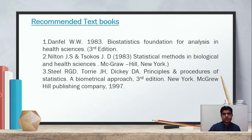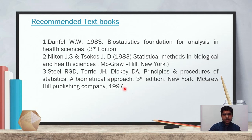Recommended books for Biostatistics include Denphill, WWF (1983), Biostatistics: Fundamentals for Analysis and Health Sciences, third edition — this is an older edition, you can take a newer version. Also Nelson's Statistical Methods in Biological and Health Sciences — the author name has been updated, you can take the newer one. And the 1997 Principles and Procedures of Statistics: A Biometrical Approach, third edition.